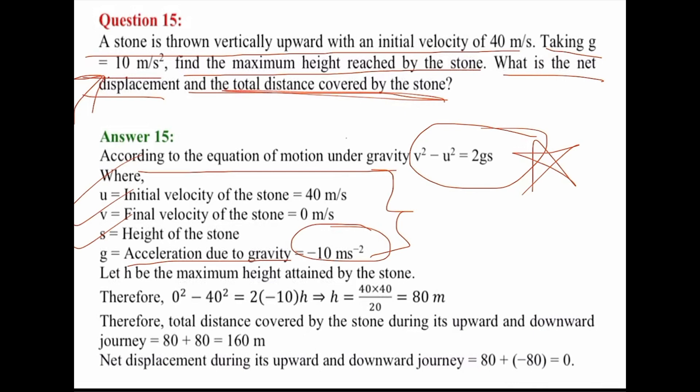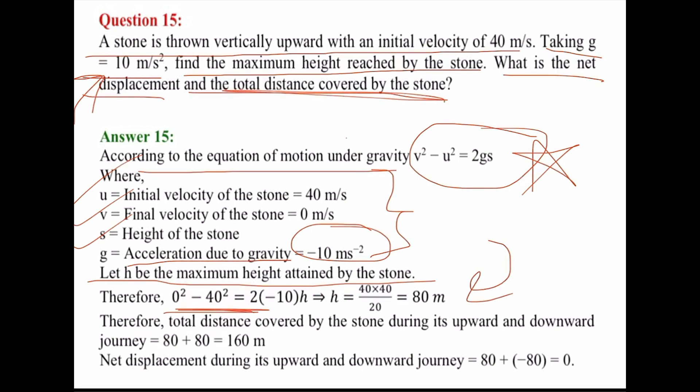S is the height of the stone, and G is given as minus 10 meters per second squared. Putting values: 0 squared minus 40 squared equals 2 times minus 10 times H. We can write 40 into 40 divided by 2 into minus 10. The minus signs cancel, giving 40 times 40 divided by 20, which equals 80 meters. So the maximum height reached by the stone is 80 meters.